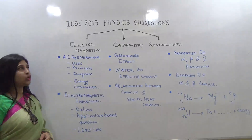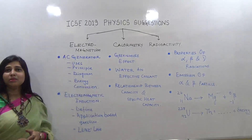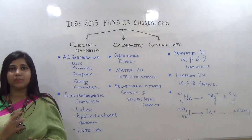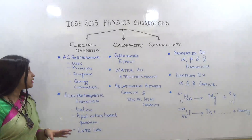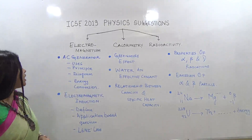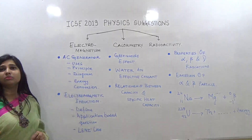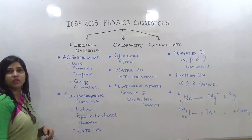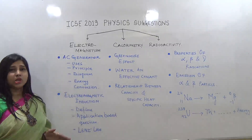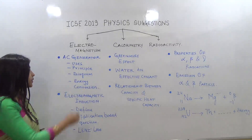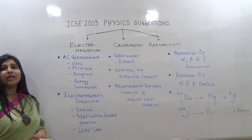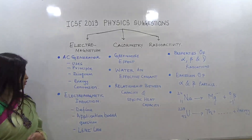Now let's move to electromagnetism. Every year either AC or DC appears in the question paper. This year I think an AC generator will be there. The probable questions include: the uses of an AC generator; the principle on which the AC generator or dynamo is based; a simple labeled diagram for the AC generator; and the energy conversion taking place in an AC generator.